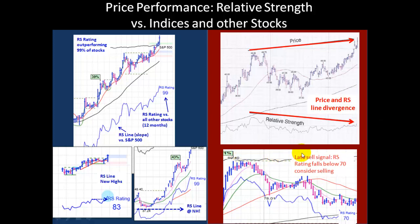You can also use relative strength as a late sell signal. Focus on the relative strength rating and see if it's falling — this tends to be a bit of a late sell signal, but once the relative strength falls to 70 or less, you definitely want to consider selling. If it was up to 99 and it's fallen to 85 or 80, you want to become more defensive.